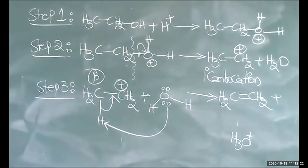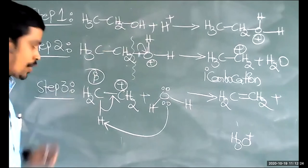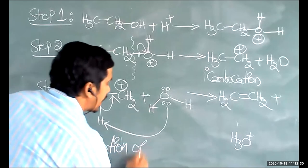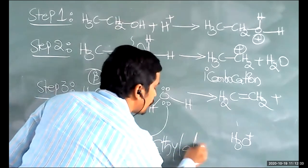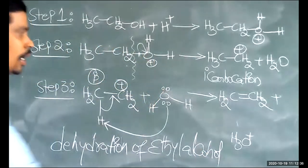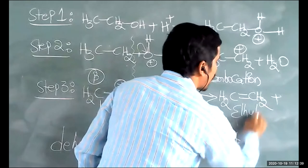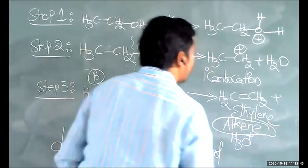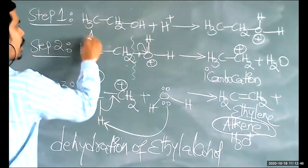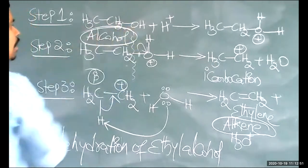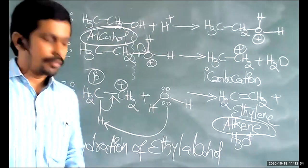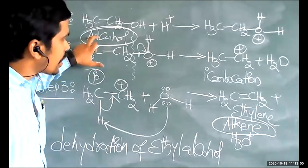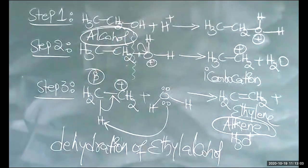These are the three steps involved in the dehydration of ethyl alcohol. The reaction is called dehydration of ethyl alcohol — dehydration means removal of a water molecule — and CH₂=CH₂ (ethylene) is the product. Ethylene is an example of an alkene, and C₂H₅OH is an example of an alcohol. Whenever alcohols undergo dehydration, the corresponding products are alkenes.